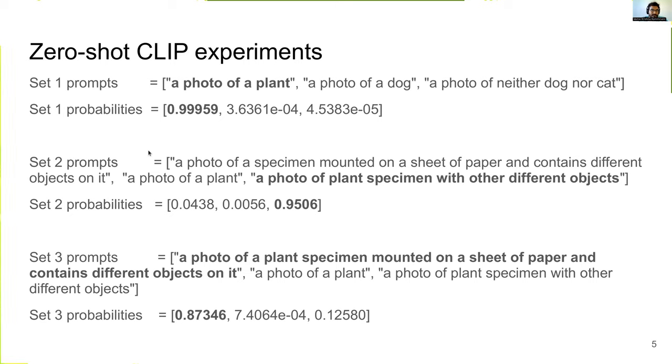In experiment 2 and experiment 3, we provided semantically similar prompts. In SET2 prompts, we anticipated that the model will predict prompt 1 is the best suitable prompt, since it explains and describes the image better compared to prompt 2 and prompt 3. However, the model predicts prompt 3 is the best suitable prompt with 95.0% confidence.